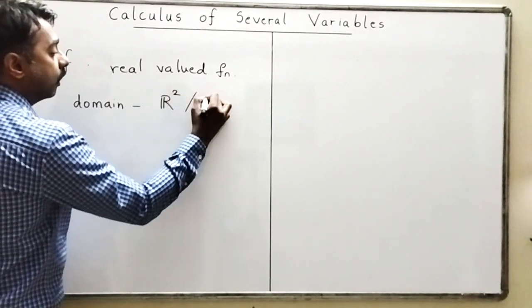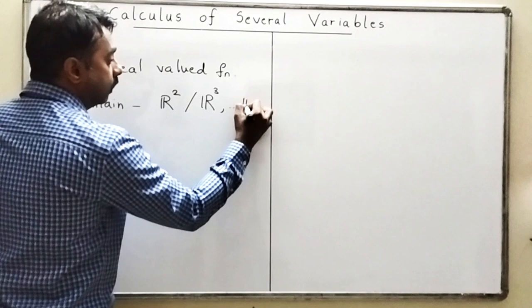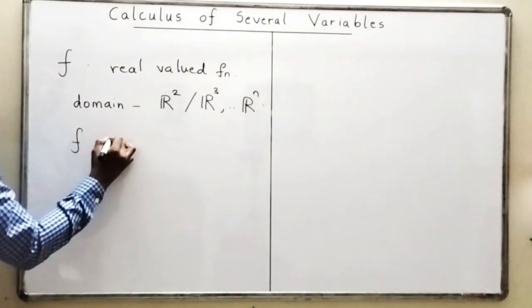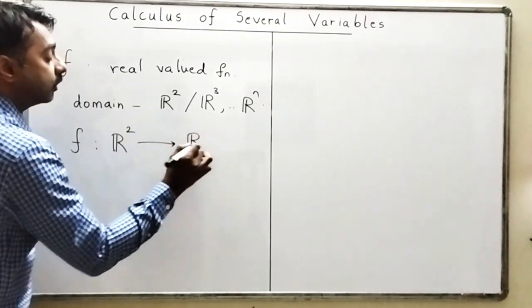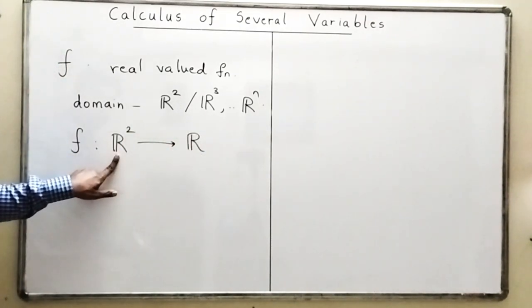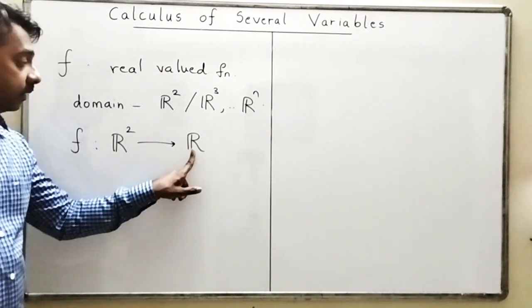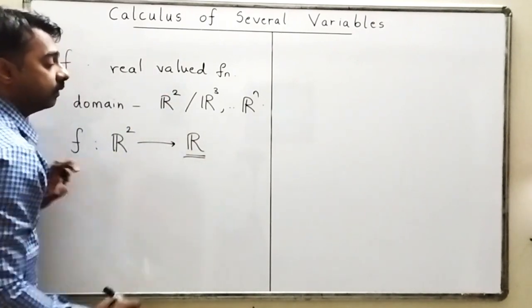I will now give an example of a function which is from R² to R. So what is this function? This function is a function with domain as R² and what is the co-domain? Real means it's a real value. So whenever this is R we call that function to be a real valued function.